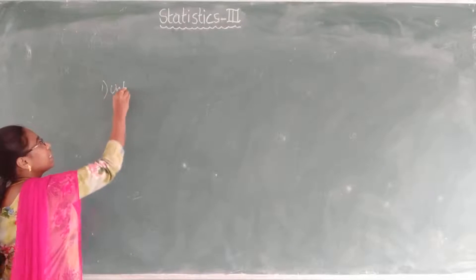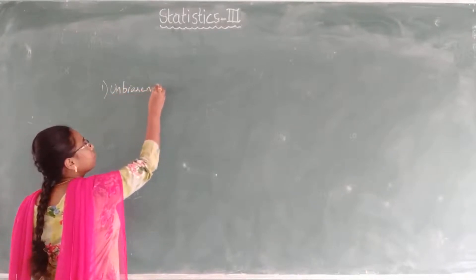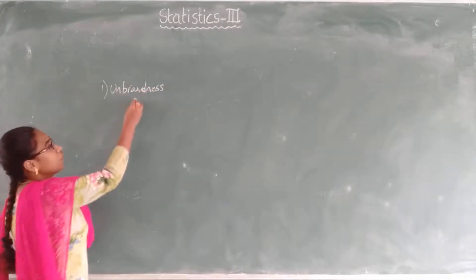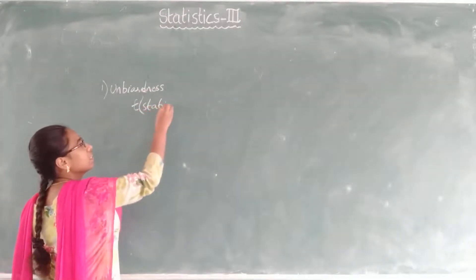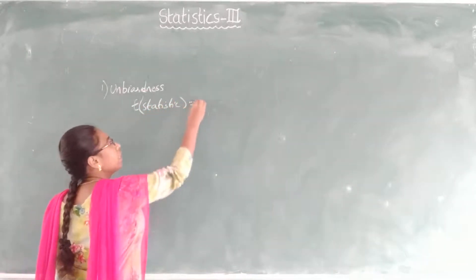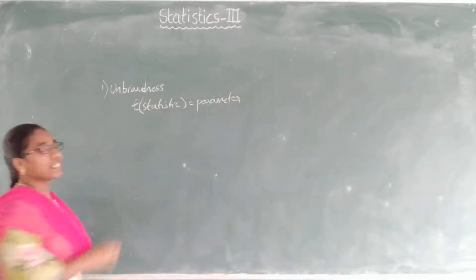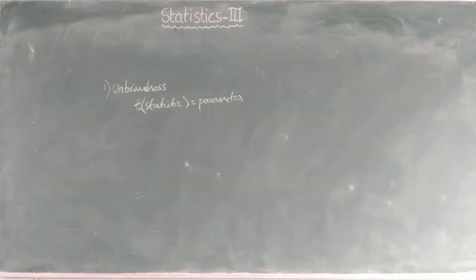The first characteristic is unbiasedness. What is unbiasedness? The condition is: expectation of a statistic is equal to the parameter value. So your statistic is nothing but the estimator, and the parameter is nothing but the estimate value. This is the condition for unbiasedness.